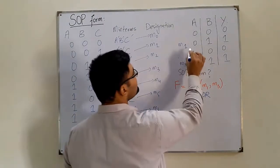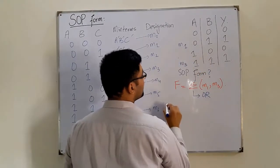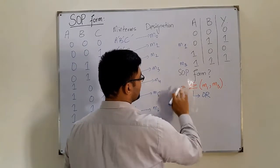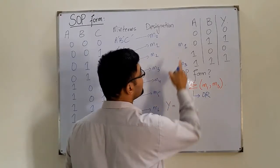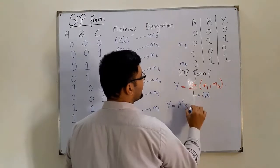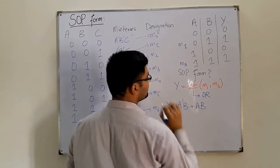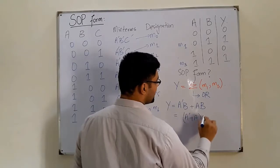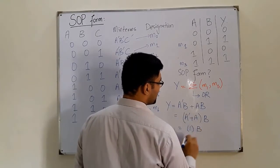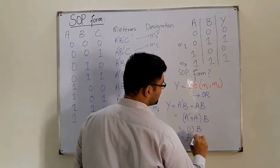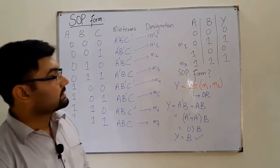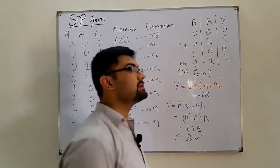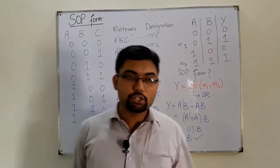What is minterm m1 for two variables? A is 0, B is 1, so m1 = A'B. And m3 = AB. So Y = A'B + AB. B is common: Y = (A' + A)·B = 1·B = B. So the minimal SOP form is Y = B. The standard form has all variables, but the minimized form does not — as stated in the last lecture.